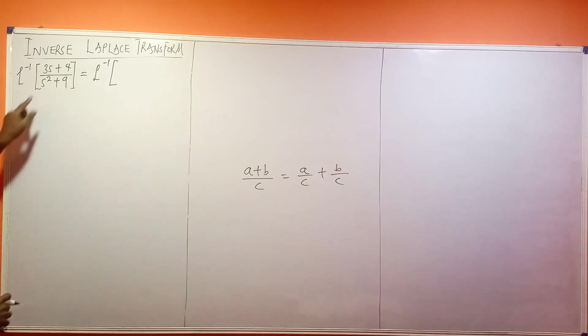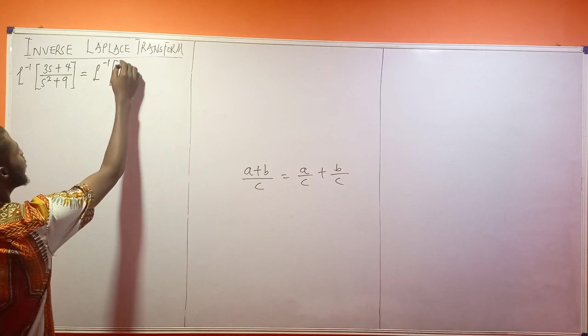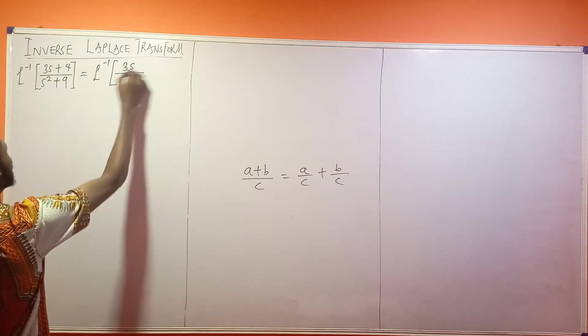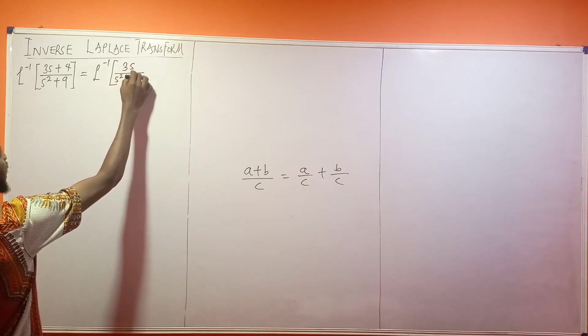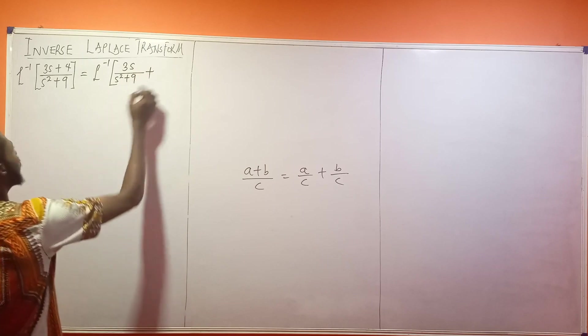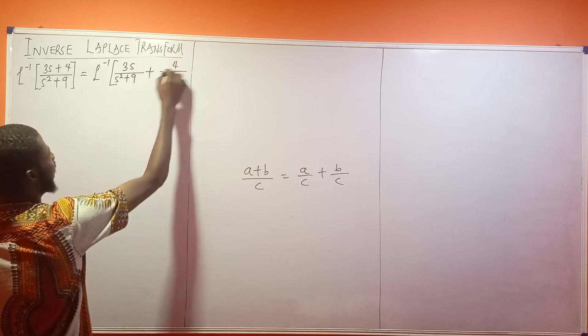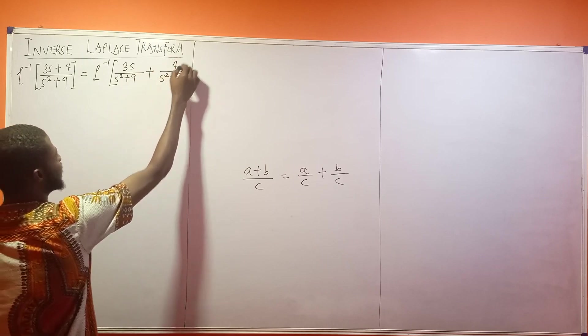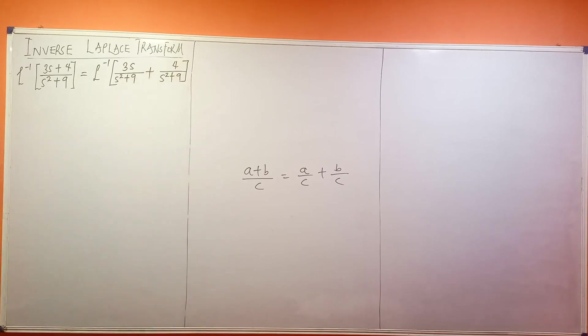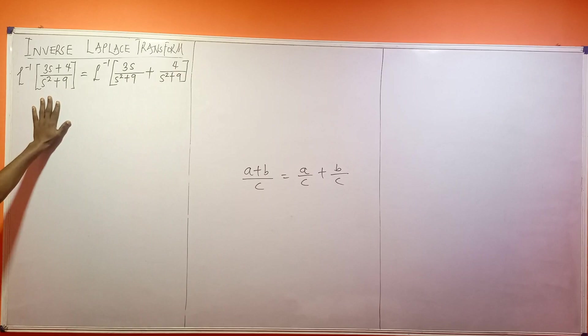So it means this expression here can be written as 3s over s squared plus 9 plus 4 over s squared plus 9. That's the meaning. We can write it like that. So this expression is actually correct for this.